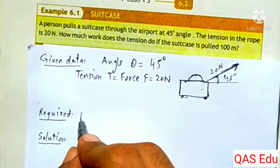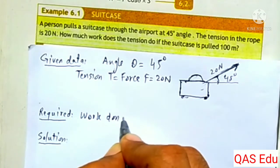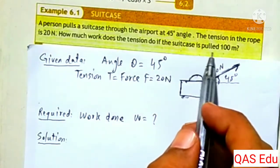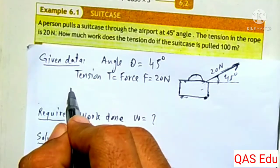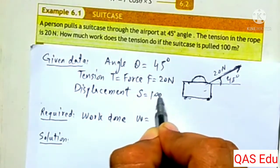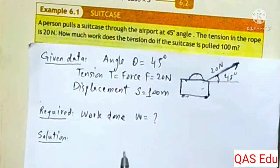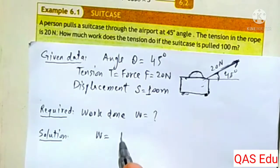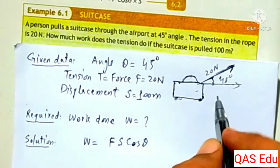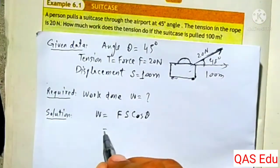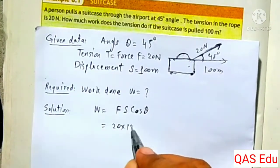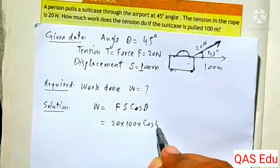We are required to find the work done. If the suitcase is pulled 100 meters, the displacement is 100 meters. The formula is W equals F cos theta, multiplied by displacement. Putting in values: force is 20 newtons, displacement S is 100 meters, multiplied by cos theta, where theta is 45 degrees.